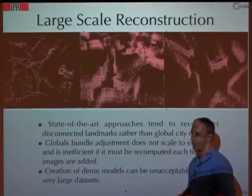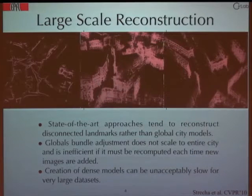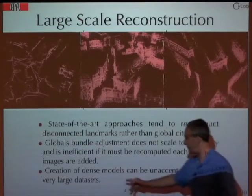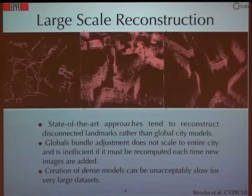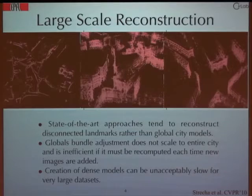There is the famous paper about reconstructing Rome in a day, but it didn't really reconstruct Rome — it reconstructed three very important landmarks, which is slightly different. That's fairly typical of state-of-the-art approaches: they tend to reconstruct disconnected clusters, because you have lots of pictures for specific locations but very few in between. Most bundlers tend to disconnect them. And if you do bundle adjustment on a very large scale, it tends to explode unless you're careful. A lot of 3D reconstruction techniques also choke if you give them too many images over too wide a range.